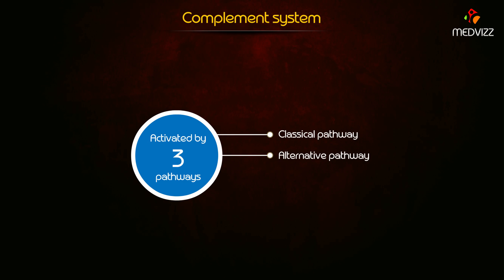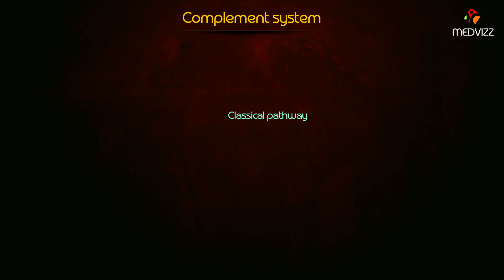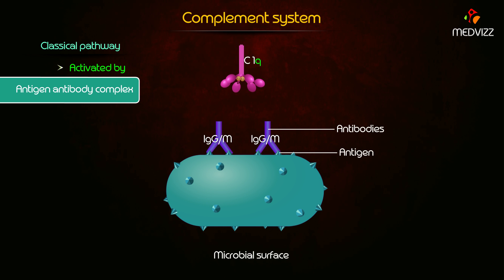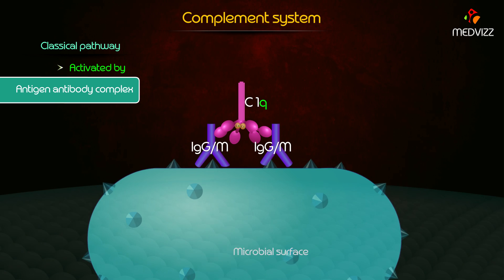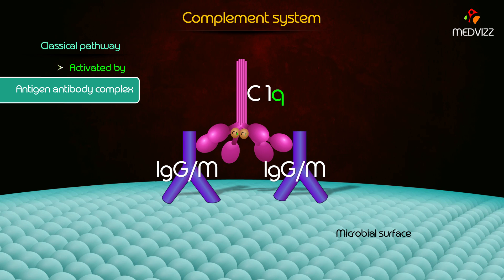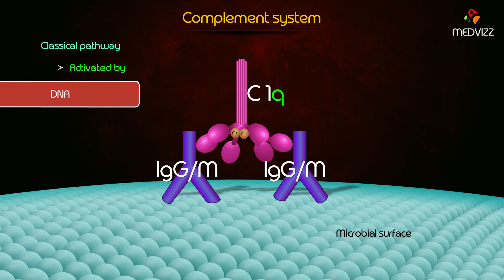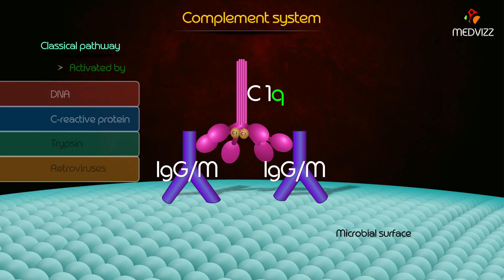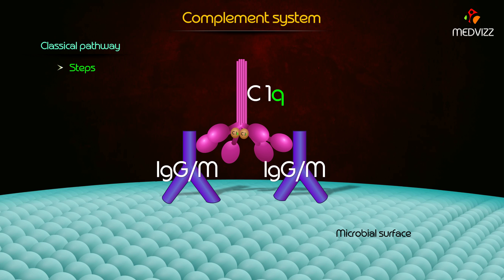Complement proteins are activated by three pathways. The first is the classical pathway, which is activated by antigen-antibody complex — that is, fixation of C1 of IgG or IgM that has combined with the antigen in the presence of calcium and magnesium ions. It is also activated by DNA, C-reactive protein, trypsin, and retrovirus.